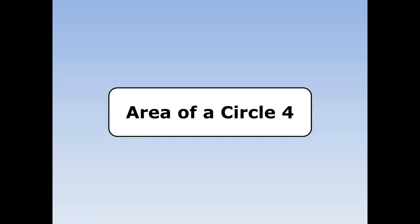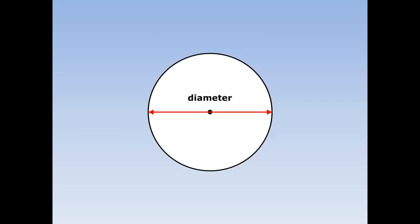Area of a circle, part 4. Let's remind ourselves about different parts of a circle. The distance from side to side through the centre is called the diameter. The distance from the centre to the outside is called the radius. The radius is half the diameter.